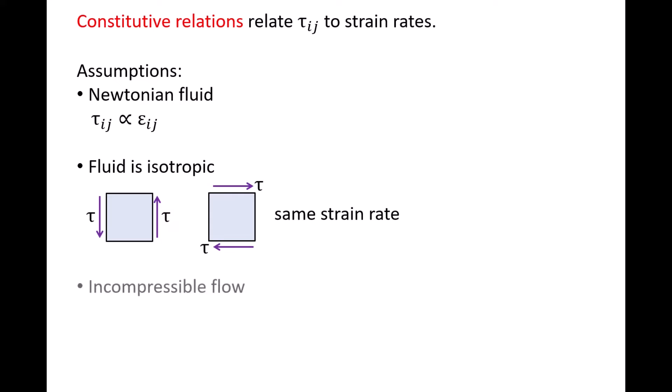The last assumption is that the fluid is incompressible, which means the density does not change significantly in time and space. In a prior video, we showed that for incompressible flows, the differential form of the conservation of mass equation becomes the divergence of the velocity field, del dot v, equals zero. Given these assumptions, it can be shown that the viscous stress tau_ij is equal to two times the absolute viscosity mu times the strain rate epsilon_ij.